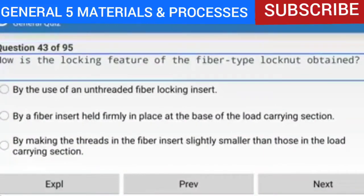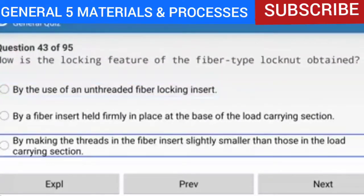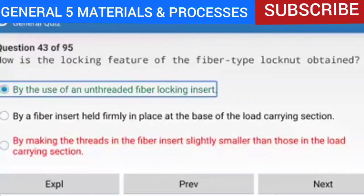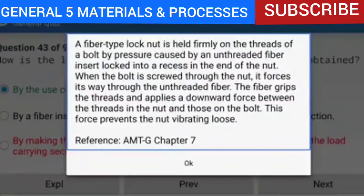Question 43 of 95: How is the locking feature of the fiber type lock nut obtained? By making the threads in the fiber insert slightly smaller than those in the load-carrying section. A fiber type lock nut is held firmly on the threads of a bolt by pressure caused by an unthreaded fiber insert locked into a recess in the end of the nut. When the bolt is screwed through, it forces its way through the unthreaded fiber. The fiber grips the threads and applies a downward force, preventing the nut from vibrating loose. Reference: AMTG Chapter 7.